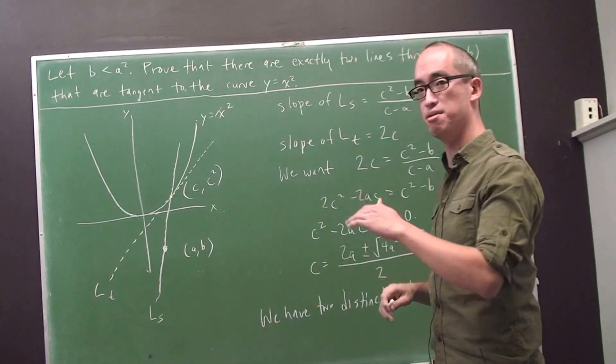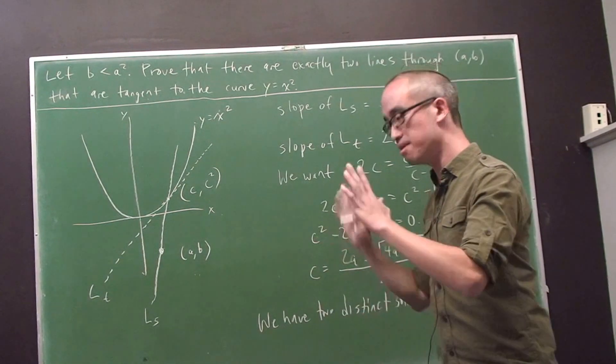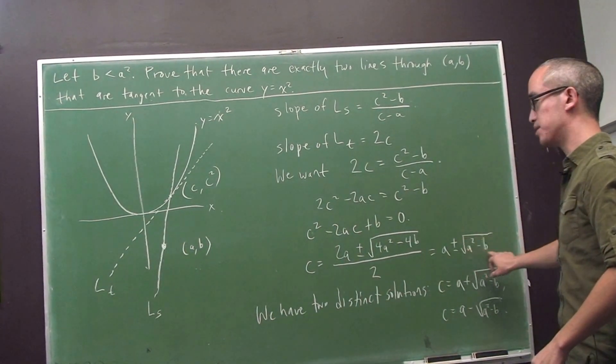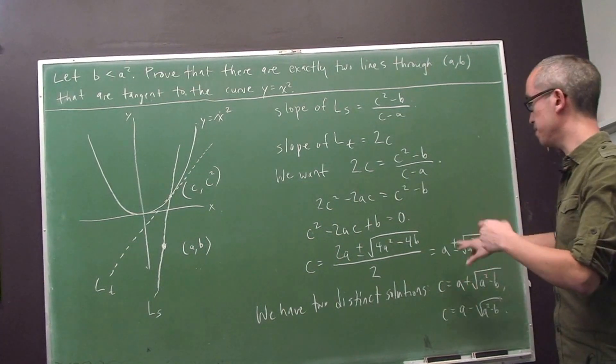And on the parabola, we would expect there to be exactly one tangent line. If b were equal to a², this would be equal to zero. And so there would be one value of c, namely c equals a.